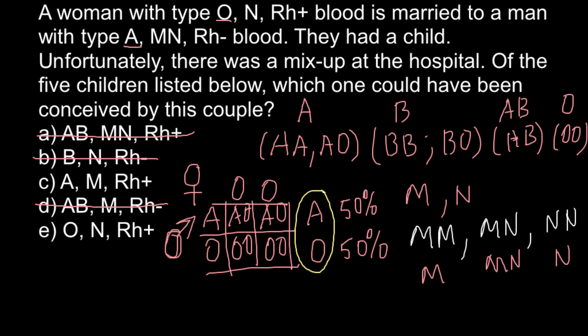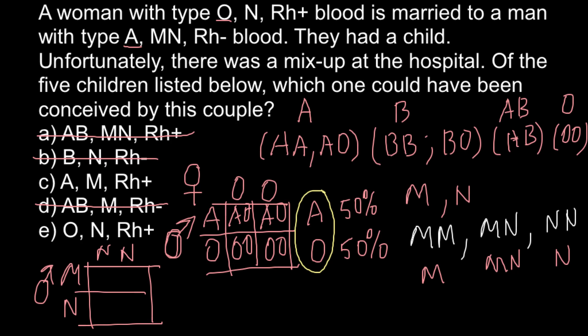We know that the father belongs to blood group MN, and the mother belongs to blood group N — so her only possible genotype is NN. If we build a Punnett square with the father as MN and the mother as NN, only two kinds of genotypes are possible: MN and NN. So the child can have either MN or N blood group.